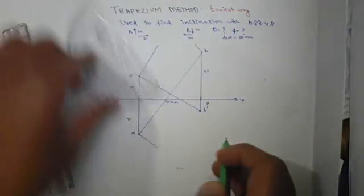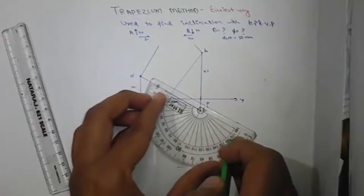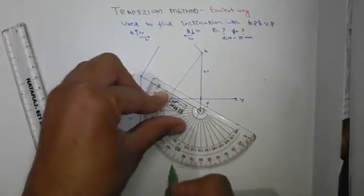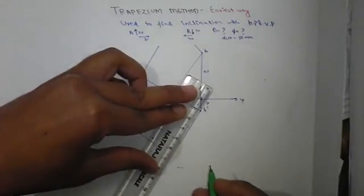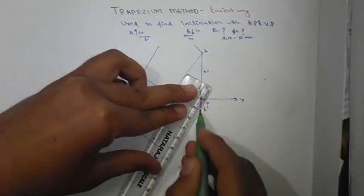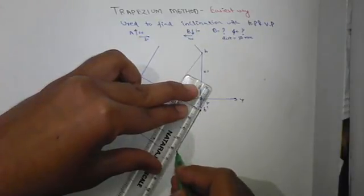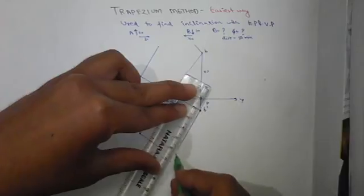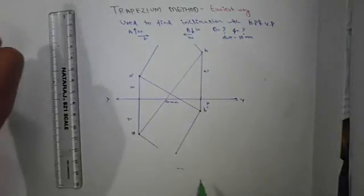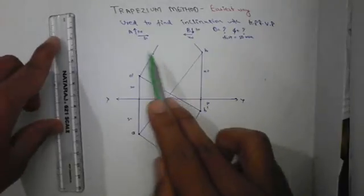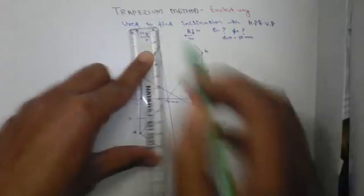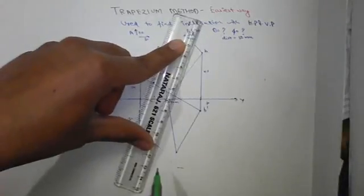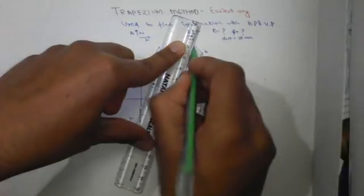Make 10mm in this side, and in this 40mm. Like this, and in this 40mm. Now join opposite corners, means this with this, and this with this, like this.